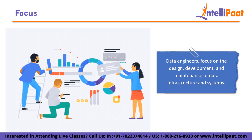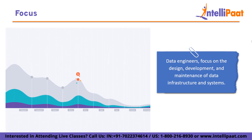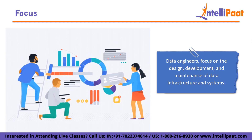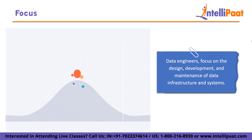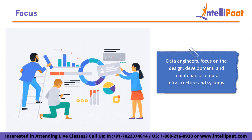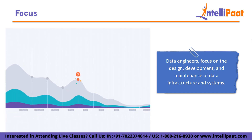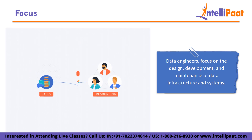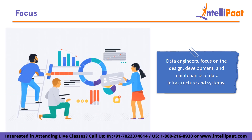Data engineers, on the other hand, focus on the design, development, and maintenance of data infrastructure and systems. Their primary goal is to ensure the smooth flow and efficient management of large volumes of data within an organization. They work on data pipelines, data storage, data integration, and data processing to support various data-driven applications and analytics processes. While both roles are integral to the data ecosystem, their focus differs significantly. Data scientists are more concerned with extracting insights from data to inform decision-making, while data engineers are focused on building and maintaining the underlying infrastructure. These roles often collaborate closely — data scientists rely on data engineers to provide high-quality, well-organized data for analysis, and data engineers work closely with data scientists to ensure the data infrastructure supports their analytical needs.